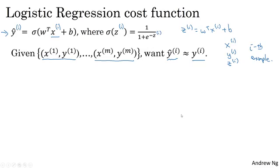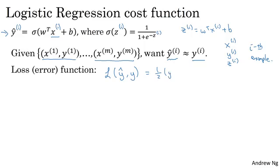Now, let's see what loss function, or error function, we can use to measure how well our algorithm is doing. One thing you could do is define the loss when your algorithm outputs y hat and the true label as y to be maybe the squared error, or one half a squared error.